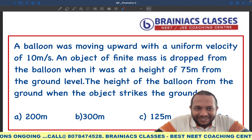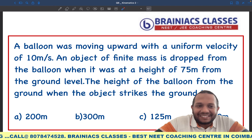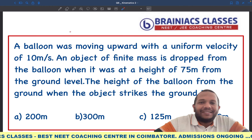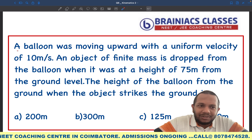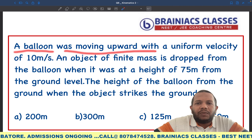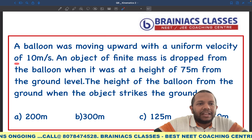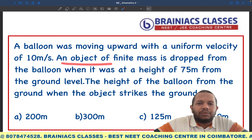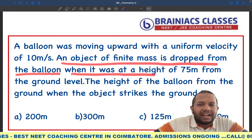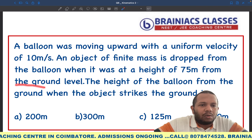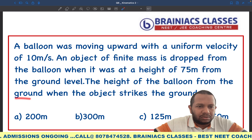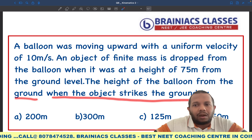Hello dear students, hope you are doing good. We are starting our balloon problems in motion in one dimension. The first question states that a balloon was moving upward with a uniform velocity of 10 meters per second. An object of finite mass is dropped from the balloon when it was at a height of 75 meters from the ground level. The height of the balloon from the ground when the object strikes the ground is to be found.